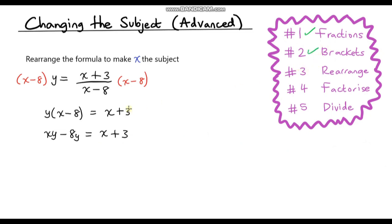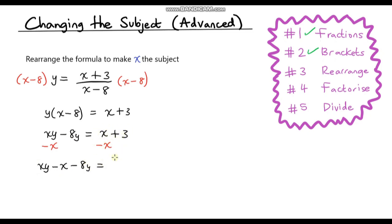Step number three: we need to rearrange. We want x on its own, so we need to put all of the x's on one side of the equation. I'm going to put them all on the left hand side. So I'm going to get rid of this x — if I subtract x from the right I need to subtract x from the left. On the left hand side I'm left with xy minus x and then minus 8y. On the right hand side these terms cancel so we're just left with 3.